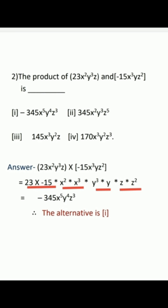Next, multiply x² by x³. When there is a multiplication sign and the base is common, the powers are added, so x raised to 2 plus 3 is x⁵. Multiply y³ by y: since y has no written power it is 1, so y raised to 3 plus 1 is y⁴. And z into z² is z raised to 1 plus 2, which is z³. So the answer is minus 345x⁵y⁴z³, which is the first alternative.